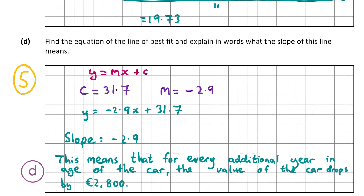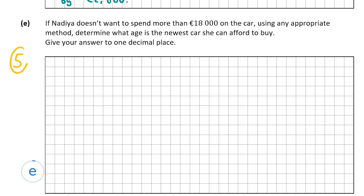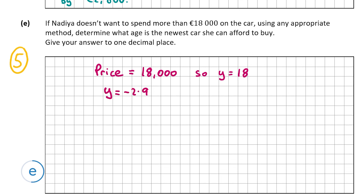Now we look at the final part of the question, worth five marks. If Nadia doesn't want to spend more than €18,000 on the car, using any appropriate method, determine what age is the newest car she can afford. We let the price equal 18,000, so y = 18 (since y is in units of thousands). Substituting into the equation of the line of best fit, y = −2.9x + 31.7.